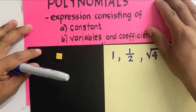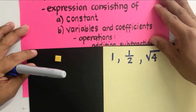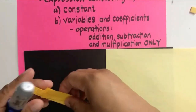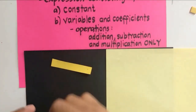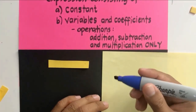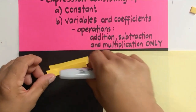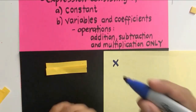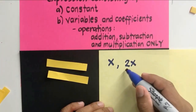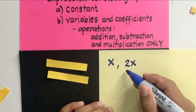Aside from constants, a polynomial can also consist of variables and coefficients and operations: addition, subtraction, and multiplication. The variable x is considered a polynomial. If we combine two x's, we can write that as 2x. 2x is also a polynomial, with x as the variable and 2 called its numerical coefficient.